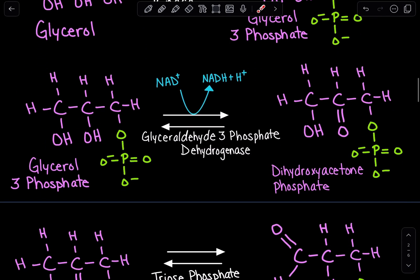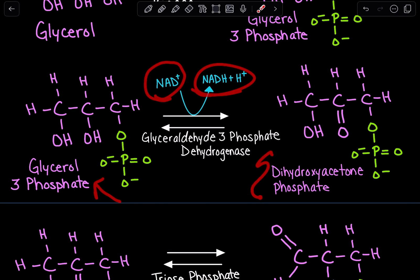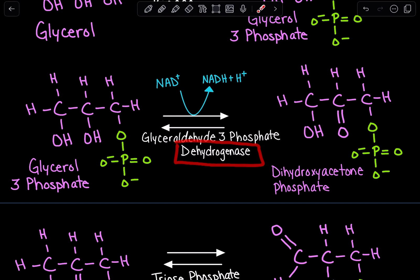After that phosphorylation, we're looking at an oxidation-reduction reaction where glycerol-3-phosphate is going to be oxidized and NAD+ is going to be reduced to get NADH and H+, and dihydroxyacetone phosphate. The enzyme catalyzing this reaction is glycerol-3-phosphate dehydrogenase. Dehydrogenases are a very common enzyme seen in oxidation-reduction reactions.